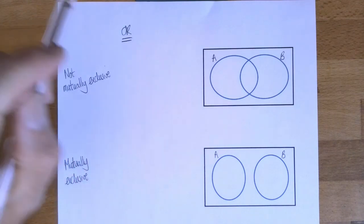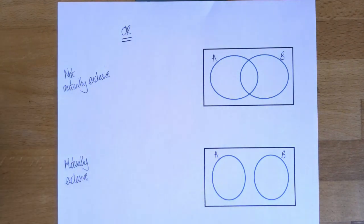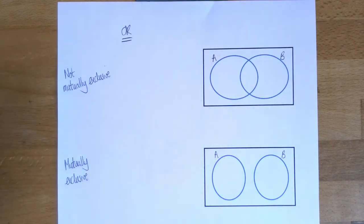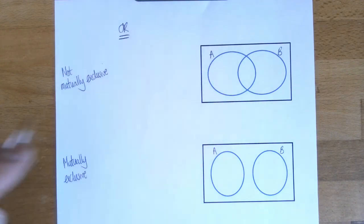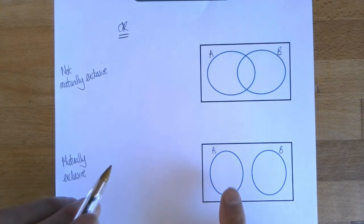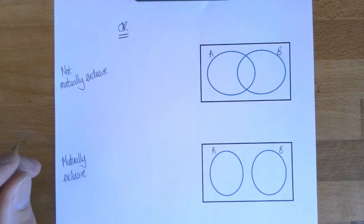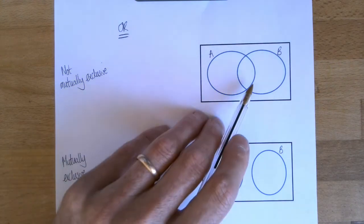I want you to imagine two events A and B. A might be 'it rains,' B might be 'my favourite football team wins the match.' This first diagram shows A and B can both happen at the same time. This second diagram shows two events which can't happen at the same time — for example, A is my team wins and B is my team loses.